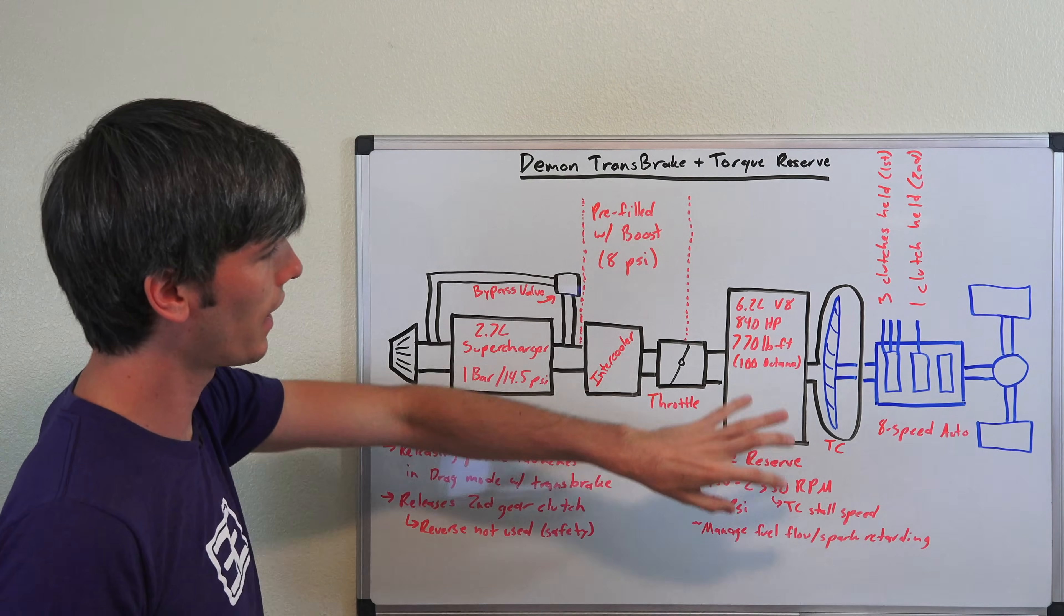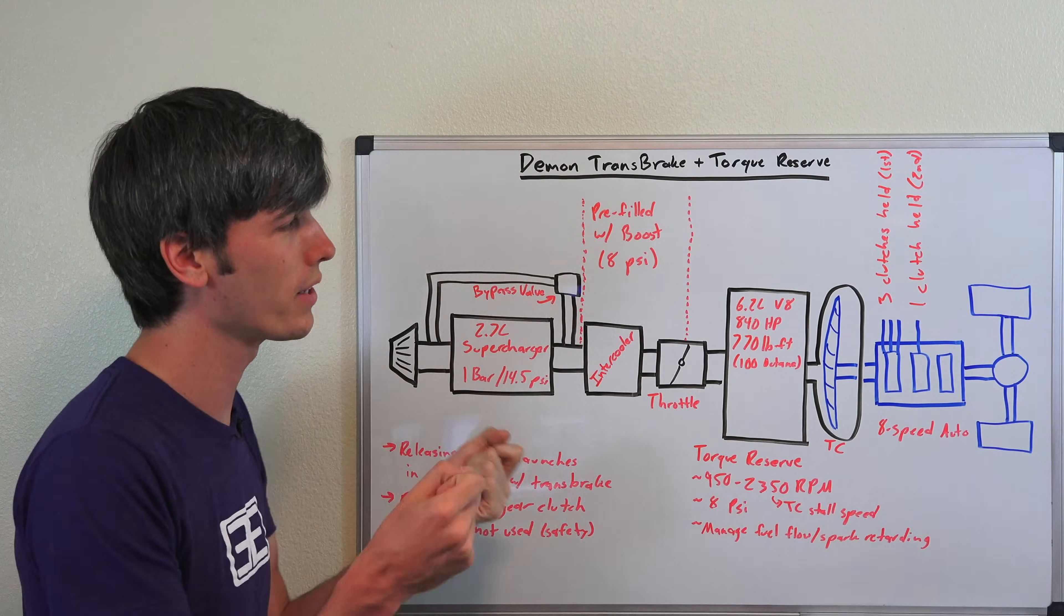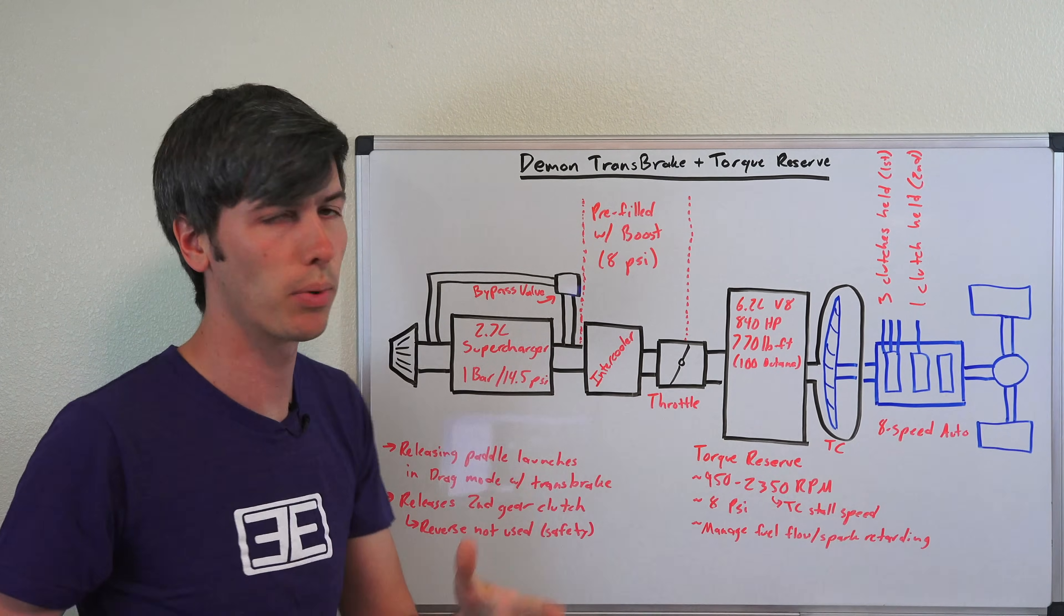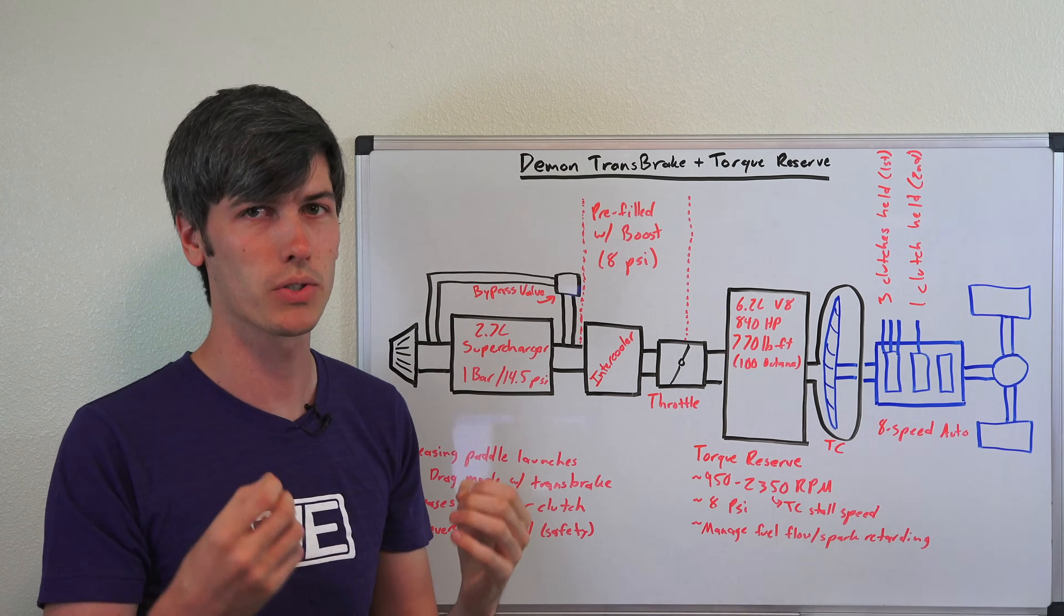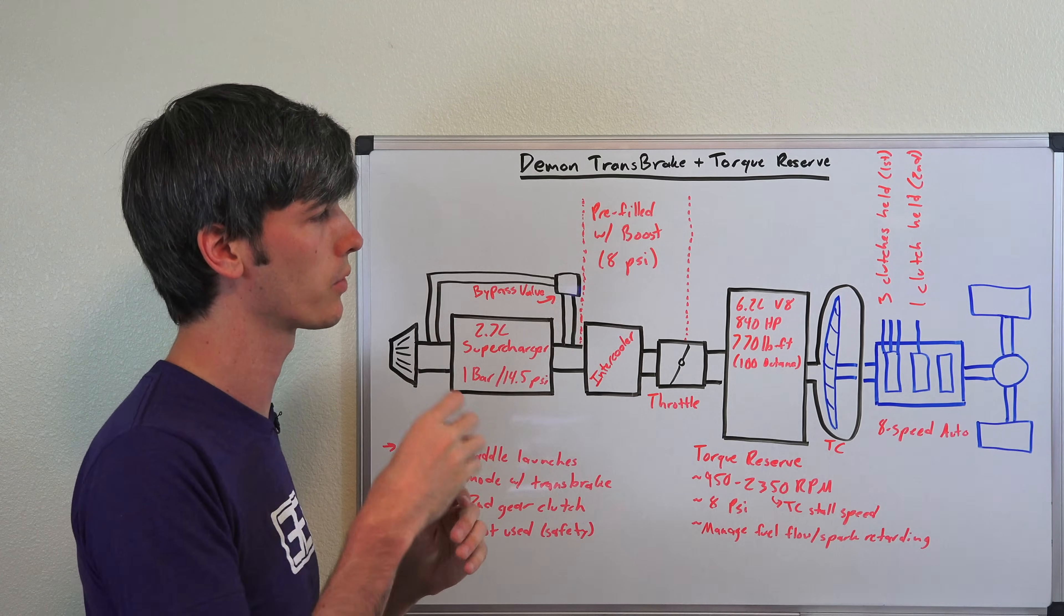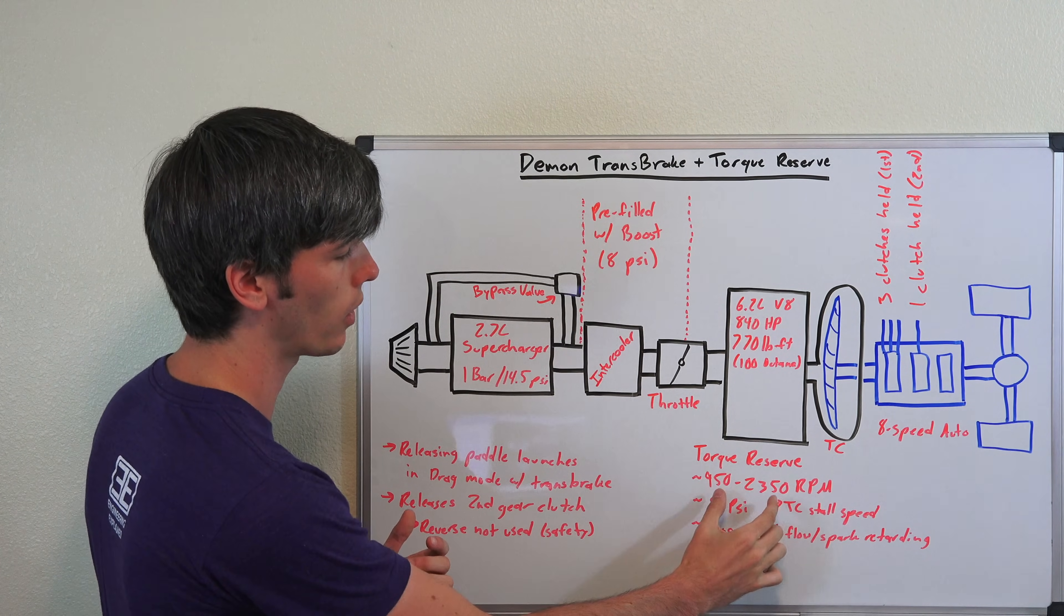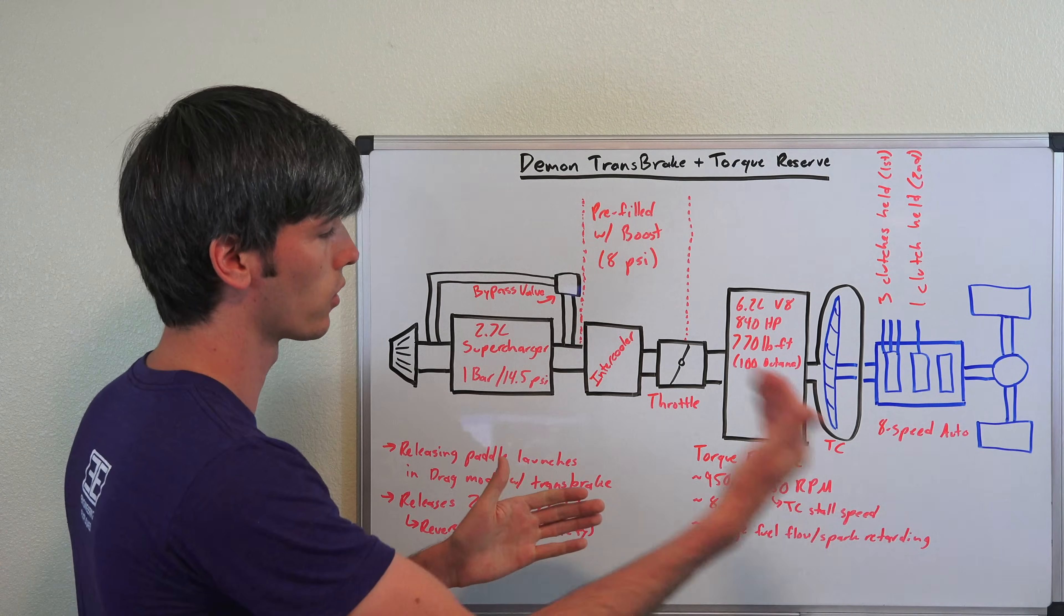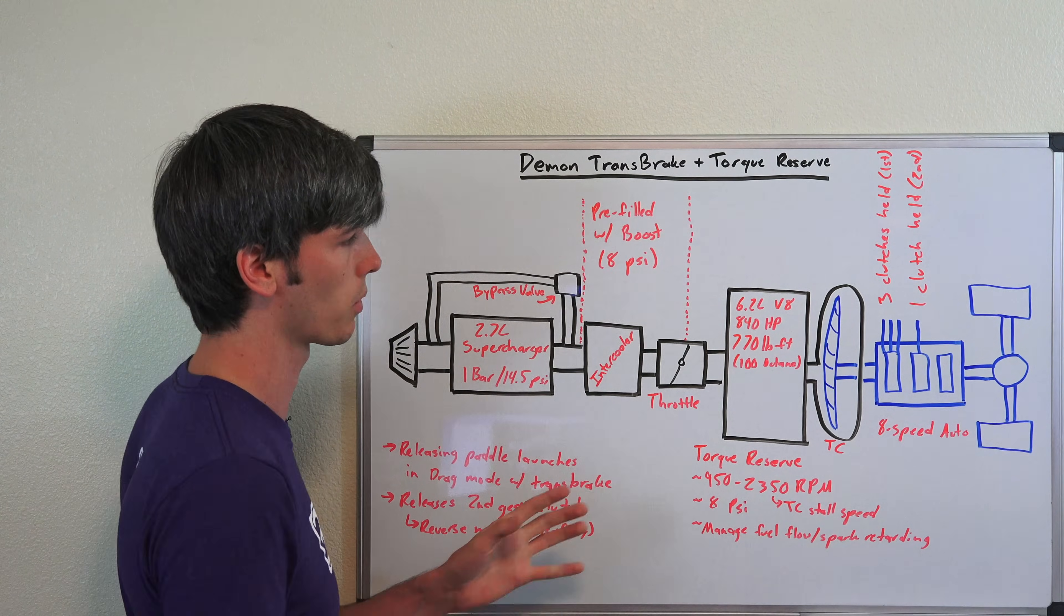And then we get into our trans brake system. So this is interesting because when you're sitting there at the drag strip and you're about to launch, if you have it in this trans brake mode, your foot's not actually on the brake—the transmission is actually what's holding it. So your foot's already off the brake and you're just using a paddle shifter to tell it to go, and you're modulating your throttle to hold it between 950 and 2350. As mentioned, if you get outside of this range, it'll take you out of torque reserve. You can still launch, but you won't have the benefits of torque reserve.